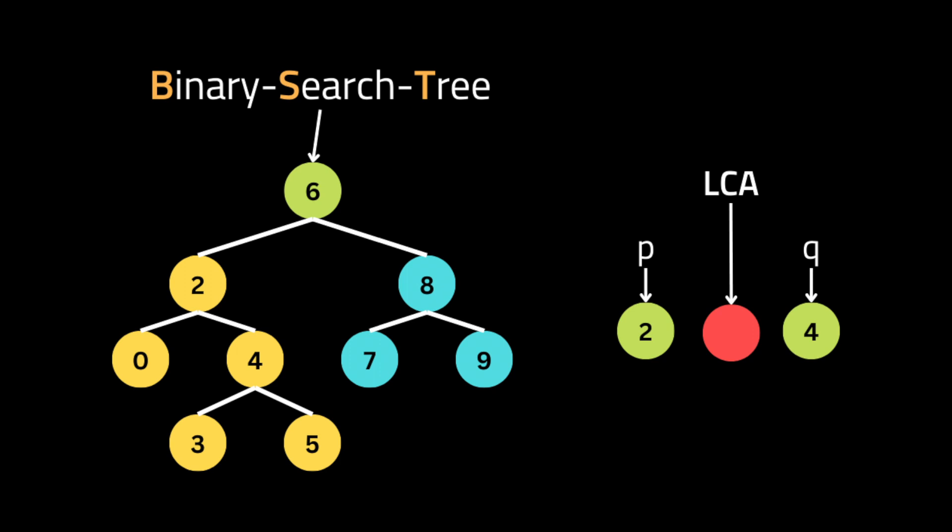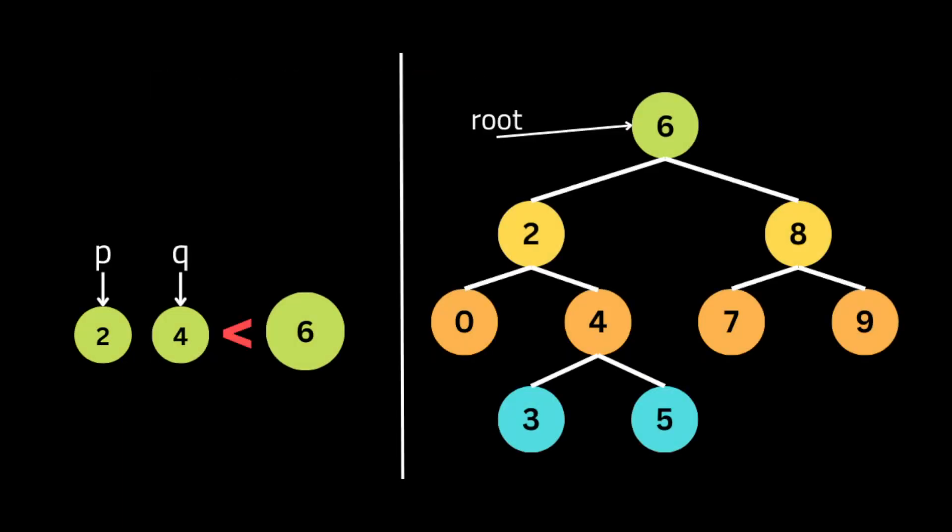To solve this problem we're going to take advantage of the binary search tree property and build our solution based on it. The first solution will use an iterative approach. The two target nodes are 2 and 4, and we'll start iterating through the BST, each time comparing the current root to the two node values to decide which direction to take.